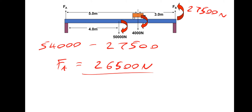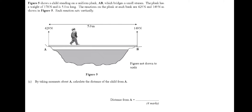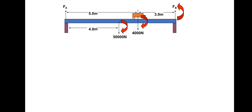Now let's move on to the next example. Figure 5 shows a child standing on a uniform plank AB which bridges a small stream. The plank has a weight of 178 newtons and is 5 metres long. The reactions on the plank at each bank are 429 newtons and 149 newtons, and each reaction acts vertically. The first question is to calculate the weight of the child, and the second is, by taking moments about A, calculate the distance of the child from A.